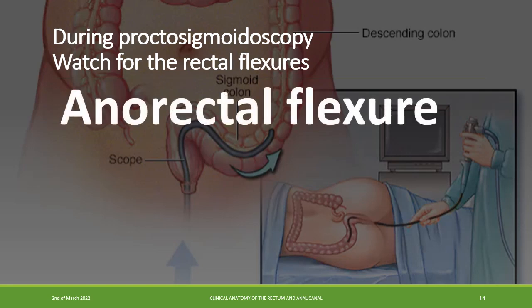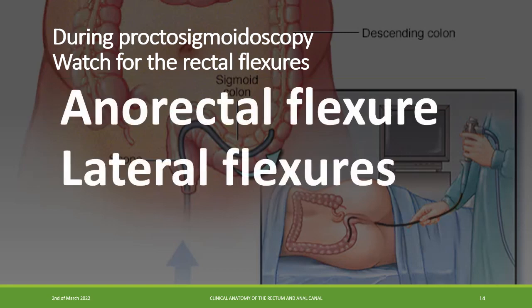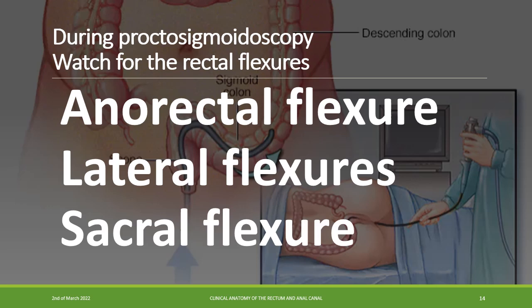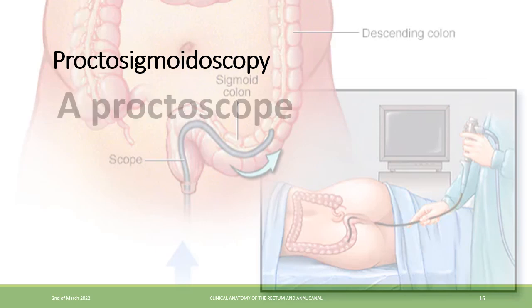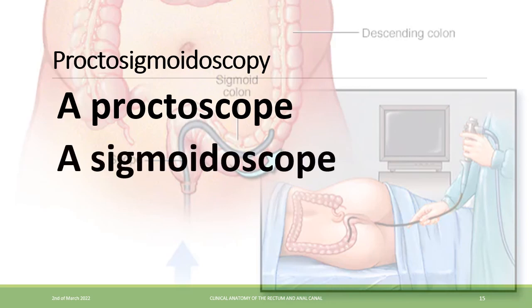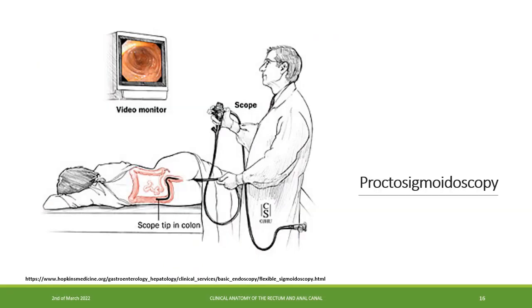Now we know about the anorectal flexure, the lateral flexures, and the sacral flexure. It is important to consider them during proctosigmoidoscopy. Proctosigmoidoscopy is a procedure for visual examination of the anus, rectum, and distal sigmoid colon. It may involve the use of a proctoscope, sigmoidoscope, or colonoscope. It can provide a clear image of the mucosa through a video camera attached to the end of the scope, which connects to a computer that can store and print color images selected during the procedure.